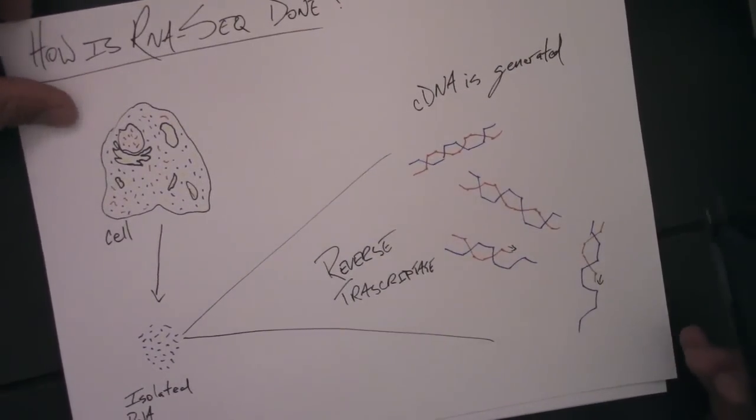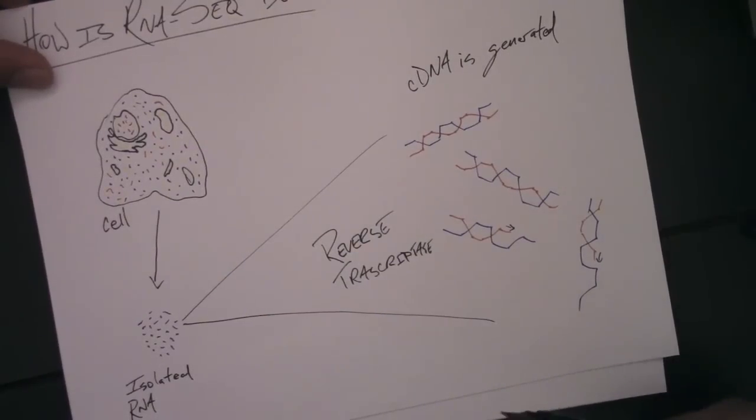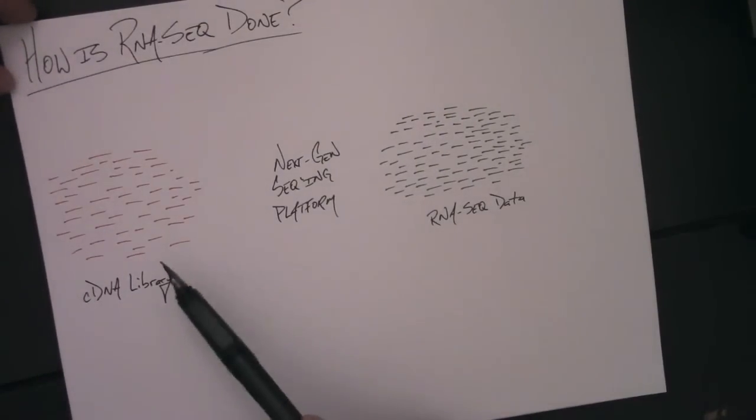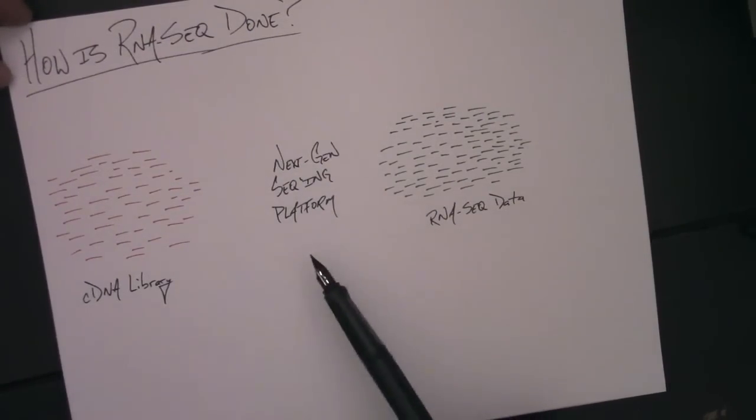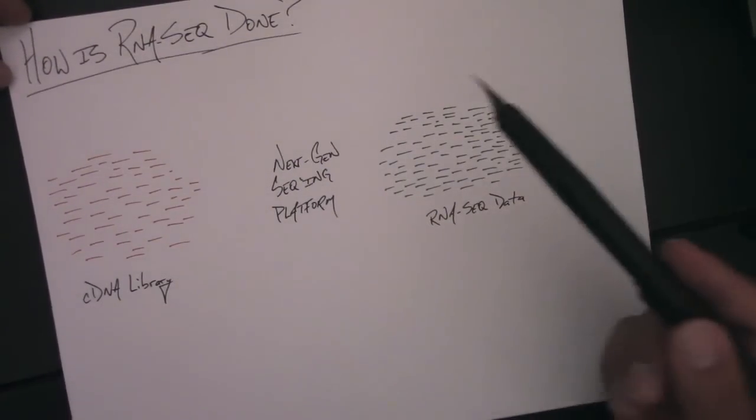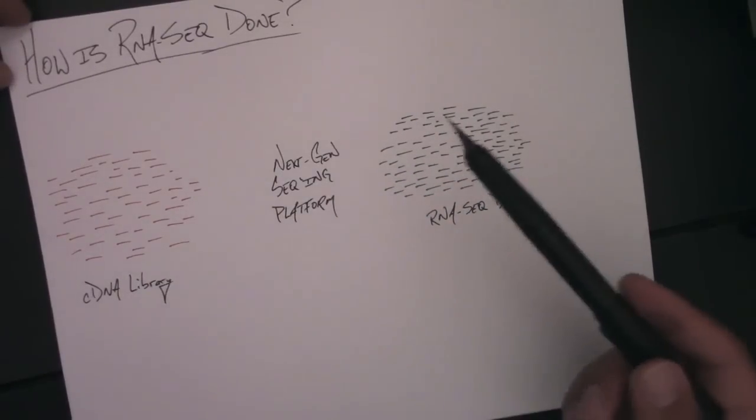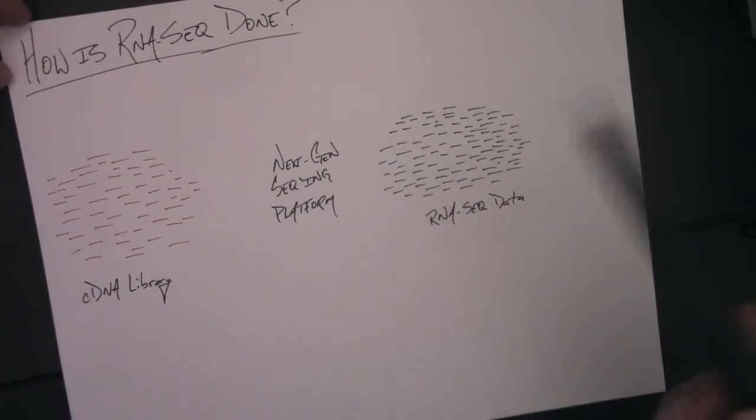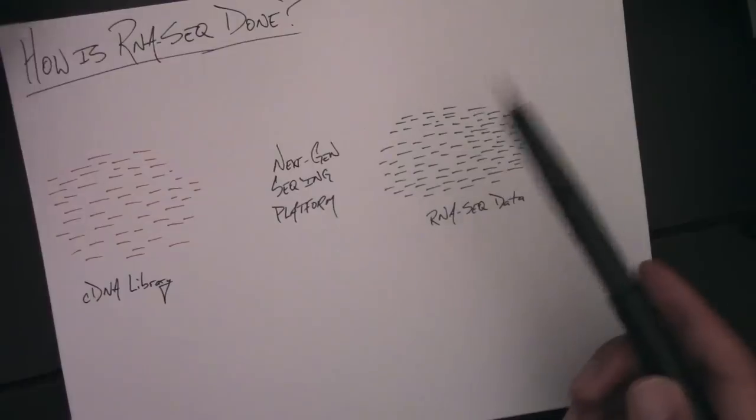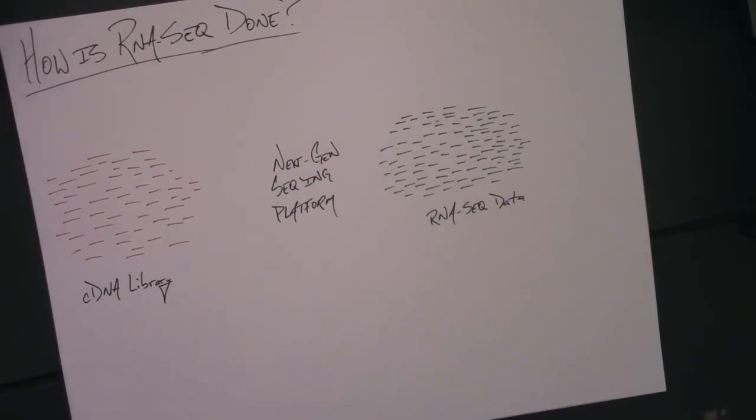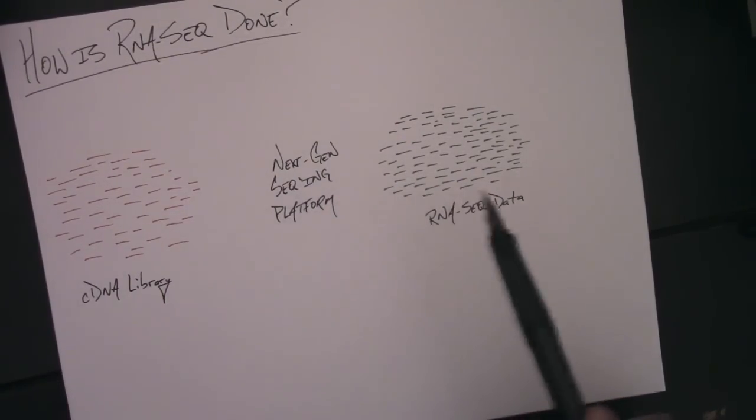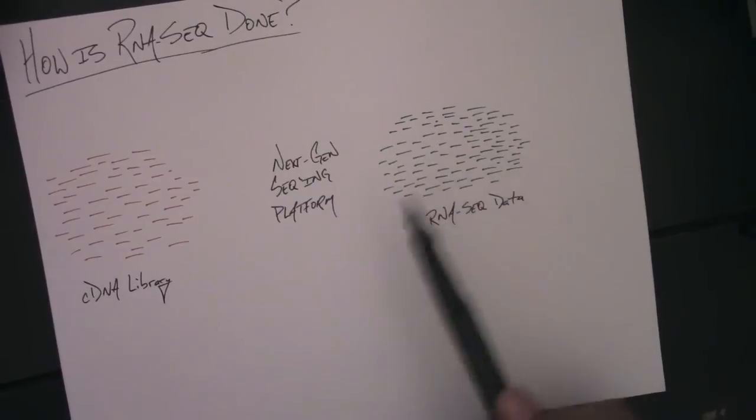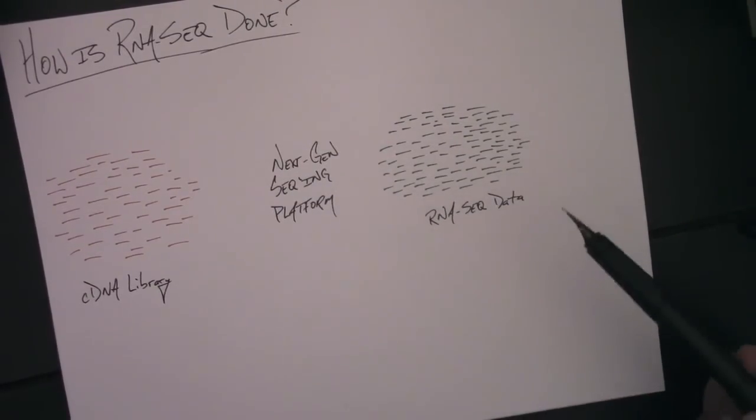So once the cDNA, a more stable molecule that represents the isolated RNA is created, is generated, the cDNA can be input right into a next generation sequencing platform. The most predominant of the platforms being Illumina, but there's also other platforms such as IonTorrent, PGM, and others I can't come to mind right now. But the point being that the cDNA can be input into a sequencing platform and then data can be produced. And this data here is the RNA-seq data that we're interested in.